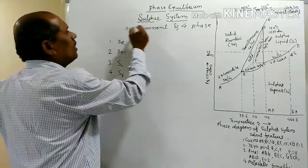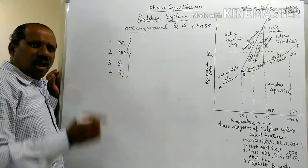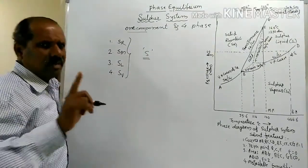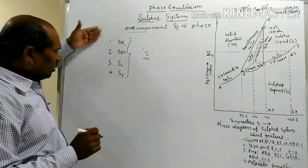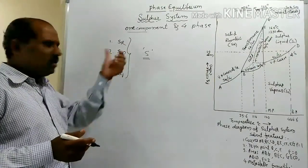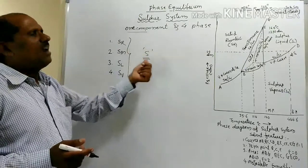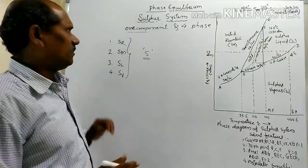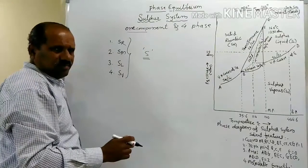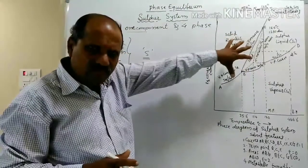All four phases have only one chemical constituent — sulfur — so with one chemical entity, the composition of all four phases can be explained. Hence the sulfur system is a one-component, four-phase system, studied using the PT (pressure-temperature) phase diagram.